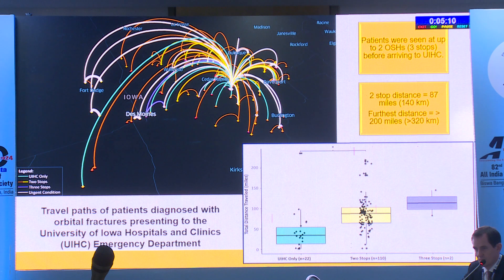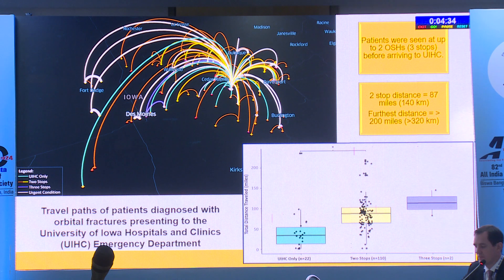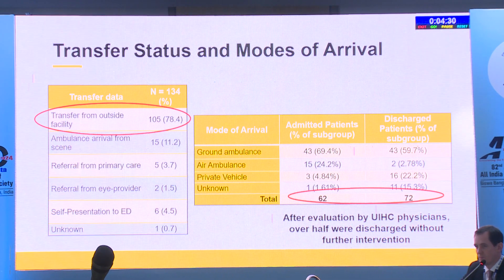University of Iowa sits in the middle of a large catchment area with many transfers. Almost everybody had at least two stops, traveling on average about 87 miles (140 km), some over 320 km—a long distance for patients who may not have the means to afford transportation. Transfers from outside facilities was the biggest driver of these cases, yet over half of evaluated patients were discharged without further intervention.